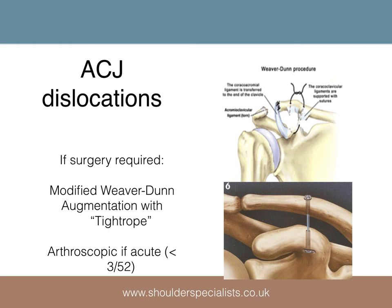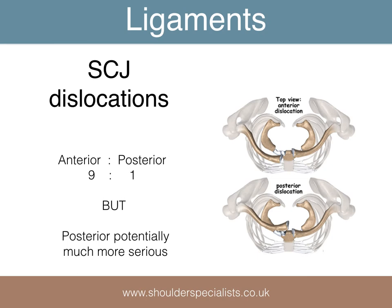Many types of operation have been described over the years, but traditionally most of these are a variation on the so-called Weaver-Dunn procedure. This involves a repair of the coracoclavicular ligaments and the use of the coracoacromial ligament to reinforce the repair. More recently, we have tended to use an artificial ligament to take the place of the coracoclavicular ligaments rather than attempt a repair. If the patient presents early, it is possible to perform an all-arthroscopic repair using an artificial ligament alone.